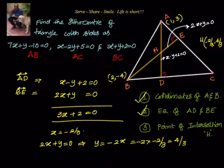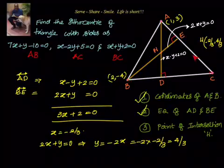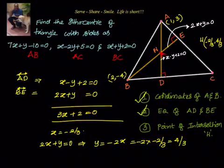To summarize: given a triangle with sides 7x plus y minus 10 equals to 0, x minus 2y plus 5 equals to 0, and x plus y plus 2 equals to 0, we found the orthocenter by first finding vertices A and B from pairwise intersections of the sides, then using the perpendicularity formula to get equations of altitudes AD and BE, and finally solving those equations by elimination to get the orthocenter at (minus 2/3, 4/3).